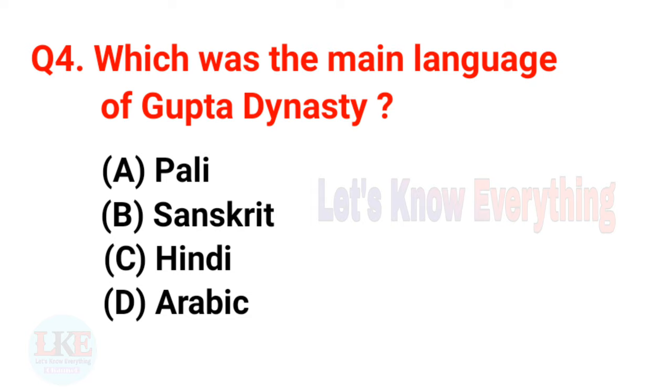Question 4: Which was the main language of the Gupta dynasty? Options: A — Pali, B — Sanskrit, C — Hindi, D — Arabic. The right answer is option B: Sanskrit.